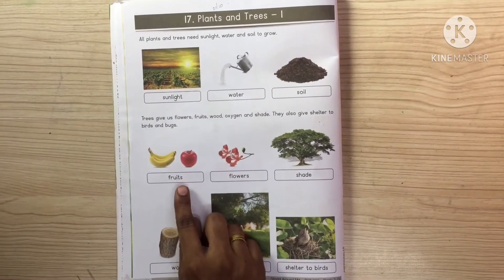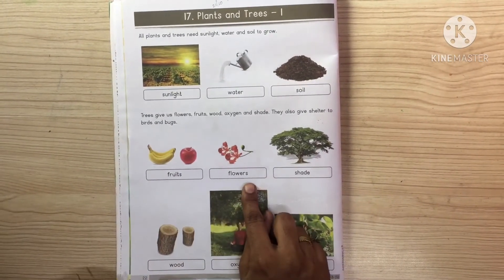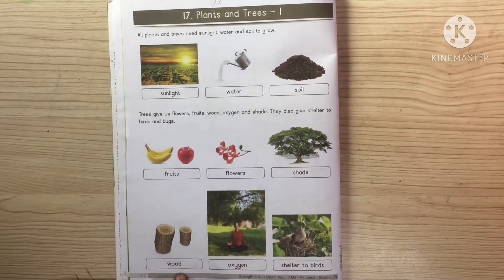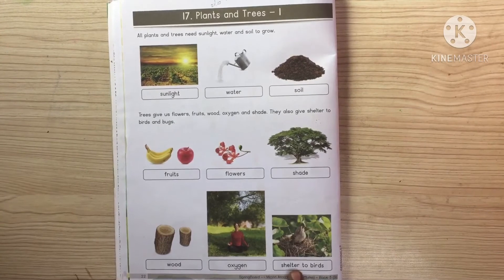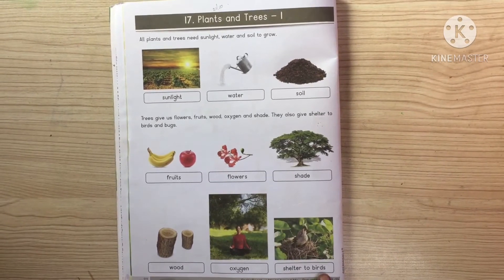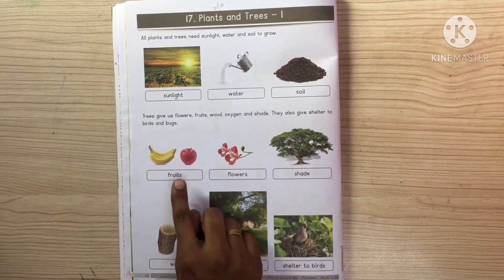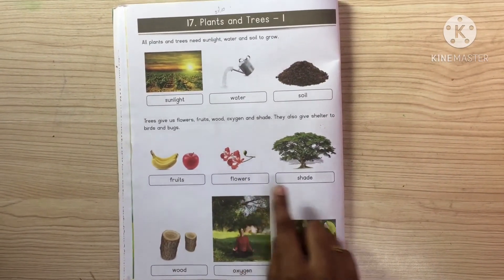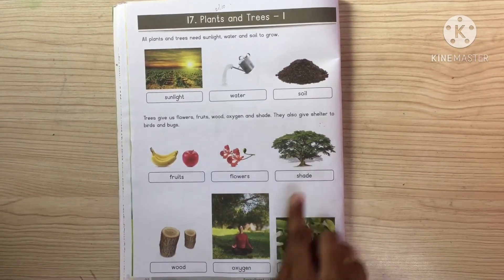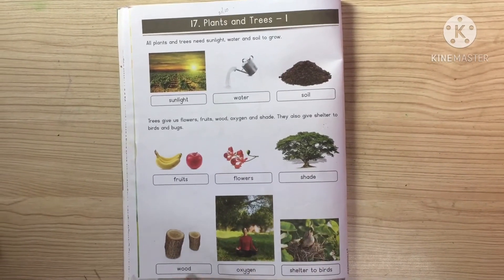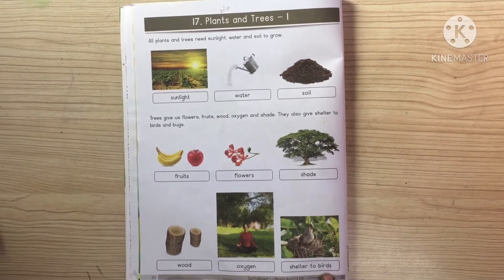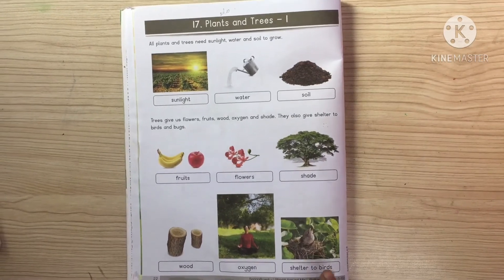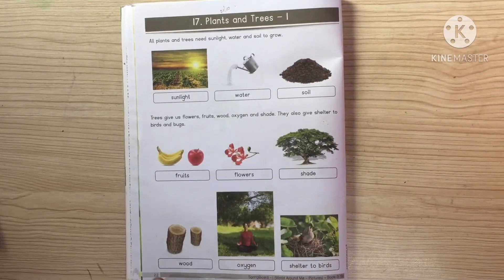Now you can see: fruits, flowers, shade, food, oxygen, shelter to birds. Okay children, in this we have to read page number 22.